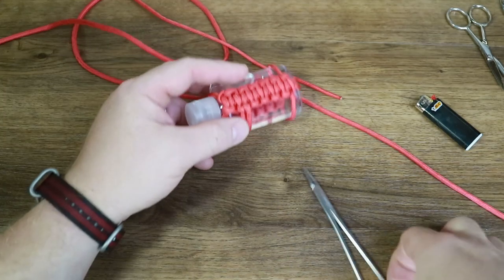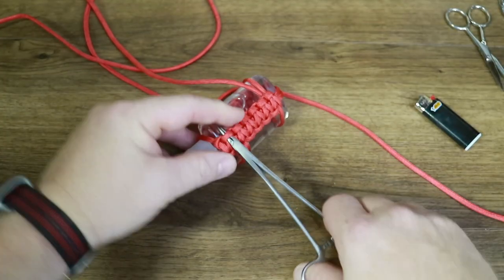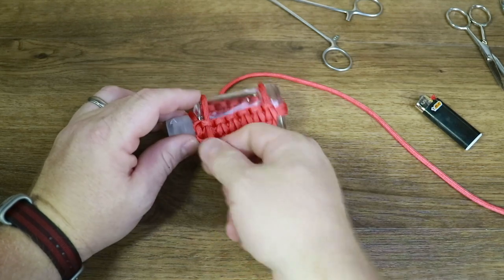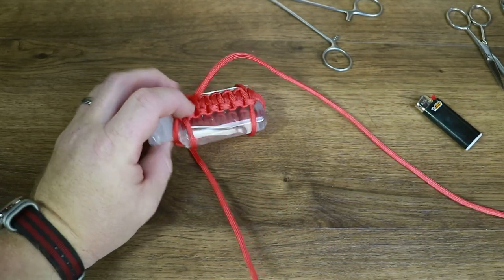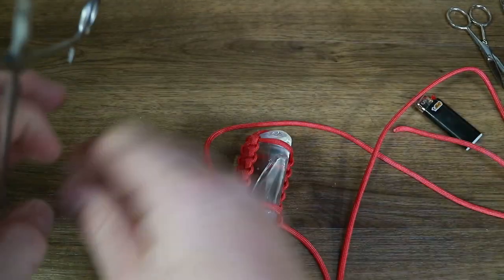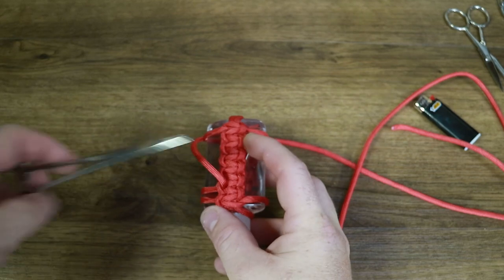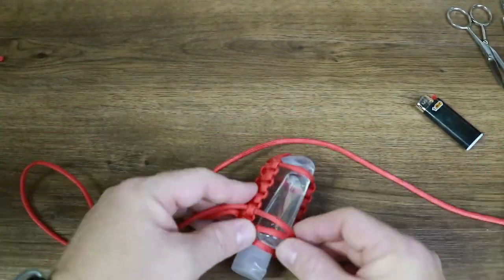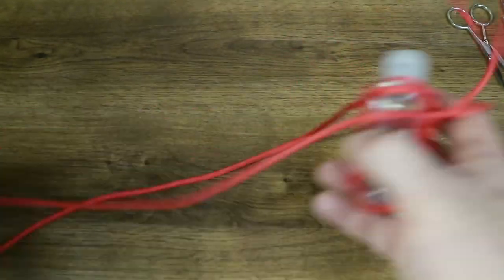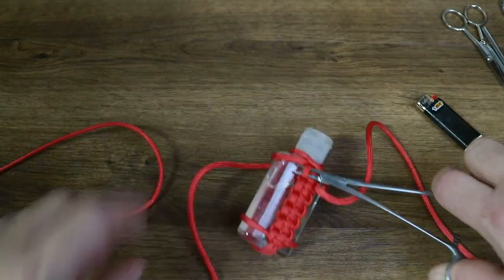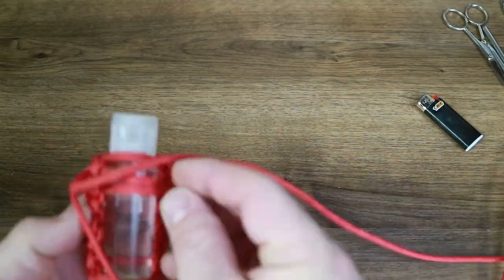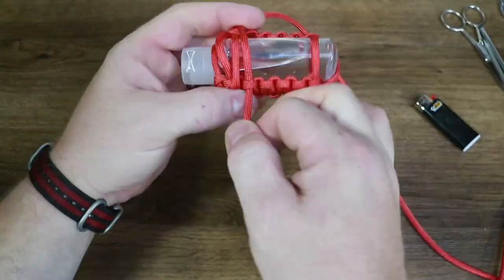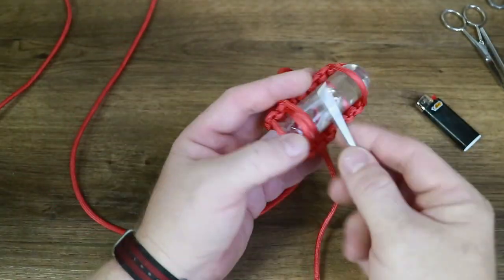For the other side, I'm going to demonstrate how to do this using a hemostat or needle nose pliers. Place the end of your hemostat through the knot, open it up, grab the end of your cord, and pull it through. Whichever method you use, just continue stitching both sides until you reach the last knot on the very bottom of the bottle.